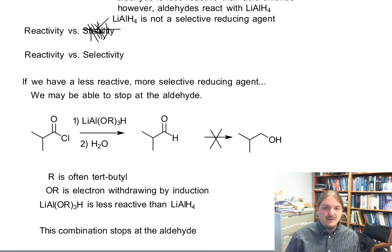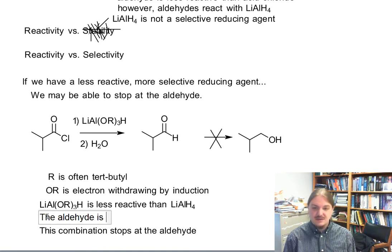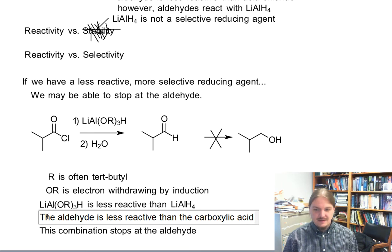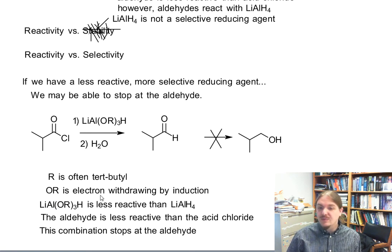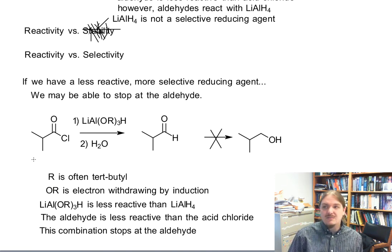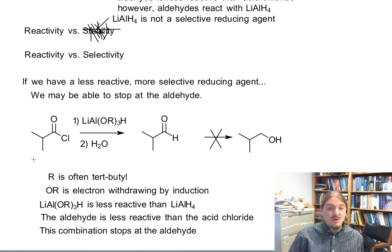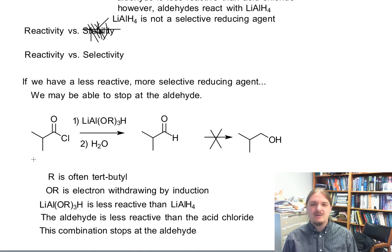The aldehyde is less reactive, and the reducing agent is less reactive. This is an opportunity for selectivity to exist. You get selectivity when the product is less reactive than the reactants and you're using a more selective reagent. So lithium trialkoxy aluminum hydride only reacts with acid chlorides and does not react further with aldehydes. Since aldehydes are less reactive than acid chlorides, and sodium borohydride reduces aldehydes, we should conclude that sodium borohydride is strong enough to reduce acid chlorides all the way to alcohols as well. In the next video, we'll talk about carbon nucleophiles and acid chlorides.